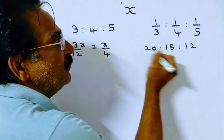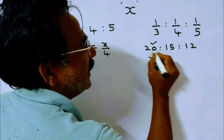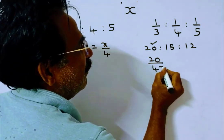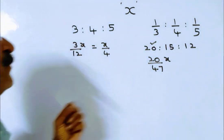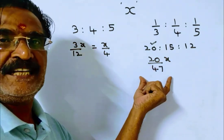According to this ratio, the lowest person gets 20 by 47 of x. So according to the new ratio, the lowest person gets 20x by 47.